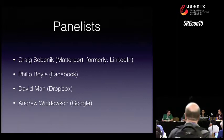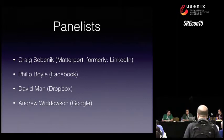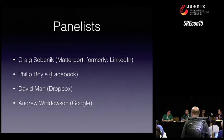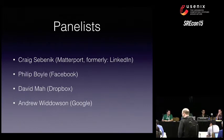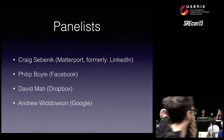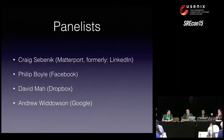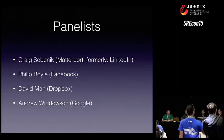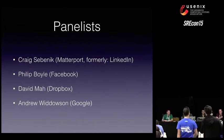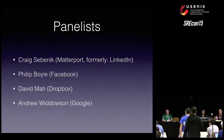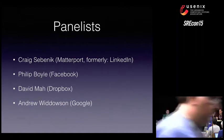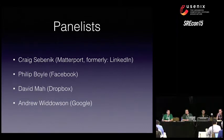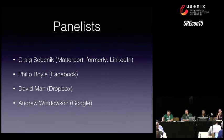I recently wrote a book — and if you want to know what you don't know about a subject, write a book. The title of the book is Salt Essentials. Salt is a configuration management system, much like Ansible, Chef, Puppet, CFEngine, et cetera. There aren't too many Sebeniks in the world, so if you search for me on Amazon, I guarantee I'll be the first hit.